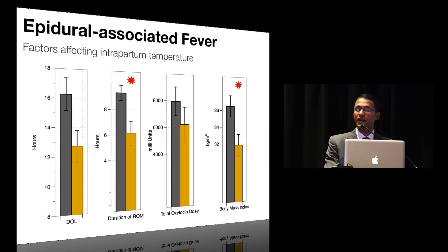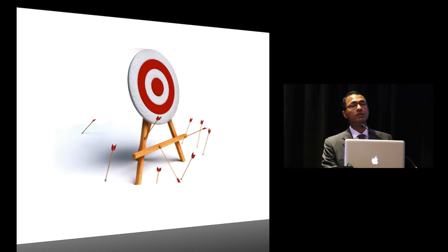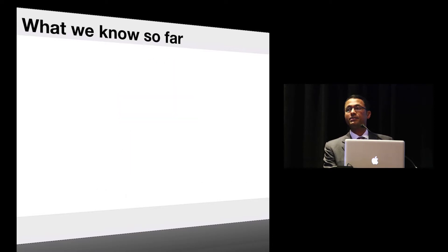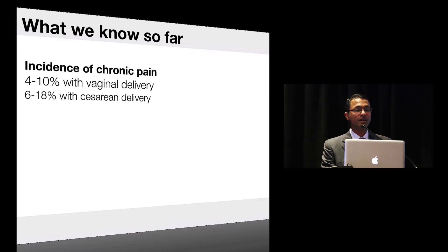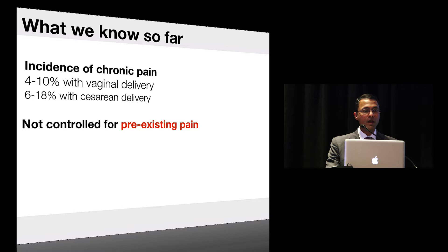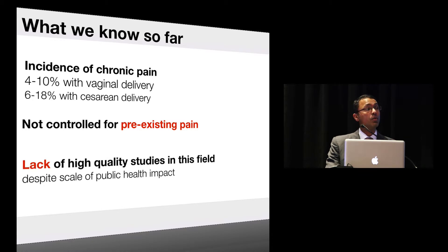So this is where we stand after these two studies, and further research is required. Moving on to another new topic which has gained a lot of attention: the incidence of chronic pain after childbirth. What we know so far is that the incidence of chronic pain is about 4 to 10% after vaginal delivery and about 6 to 18% with cesarean delivery. The problem with the majority of these studies is that they're not adjusted or controlled for pre-existing pain, and there's a lack of high-quality studies despite the scale of public health impact.